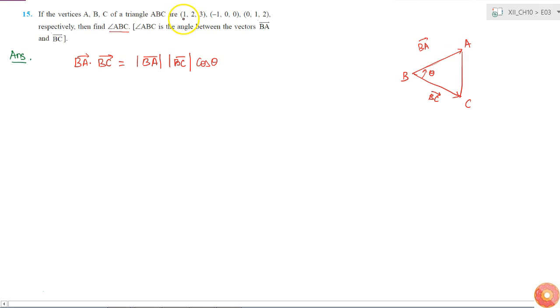Here I am given the coordinates of A is this, the coordinates of B is this, and the coordinate of C is this. So vector BA equals position vector of A minus position vector of B.